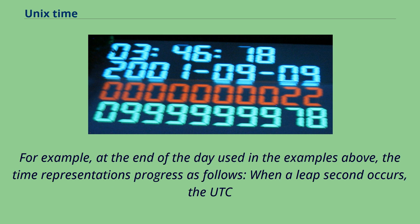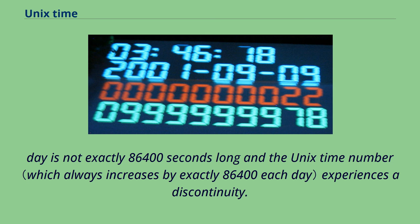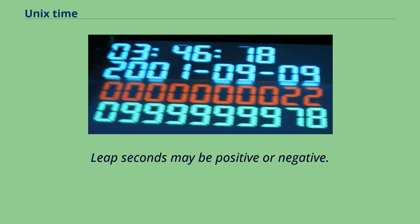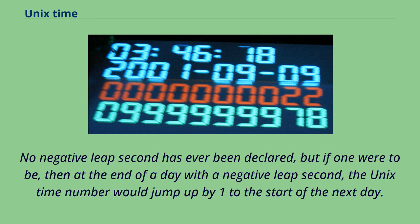When a leap second occurs, the day is not exactly 86,400 seconds long and the Unix time number experiences a discontinuity. Leap seconds may be positive or negative. No negative leap second has ever been declared, but if one were to occur, then at the end of a day with a negative leap second, the Unix time number would jump up by 1 to the start of the next day.